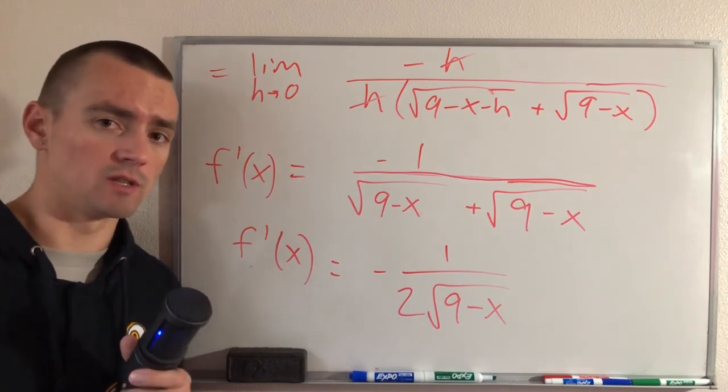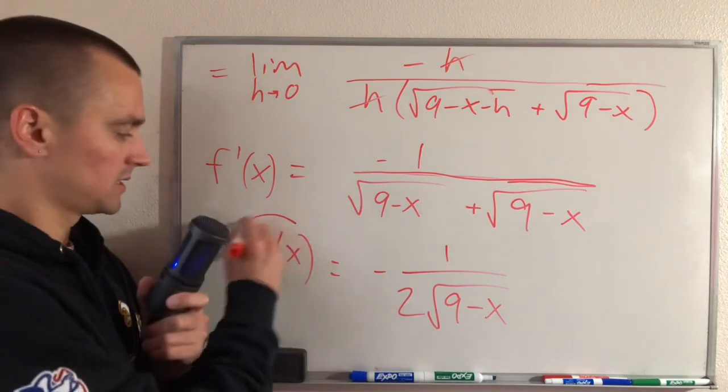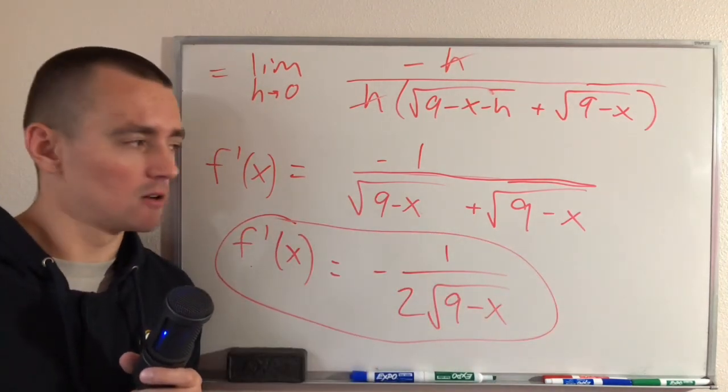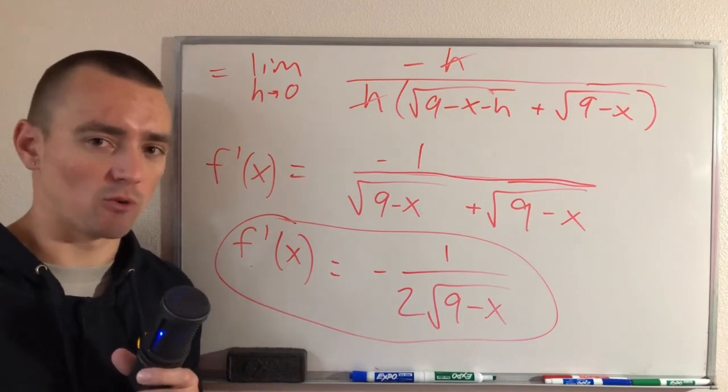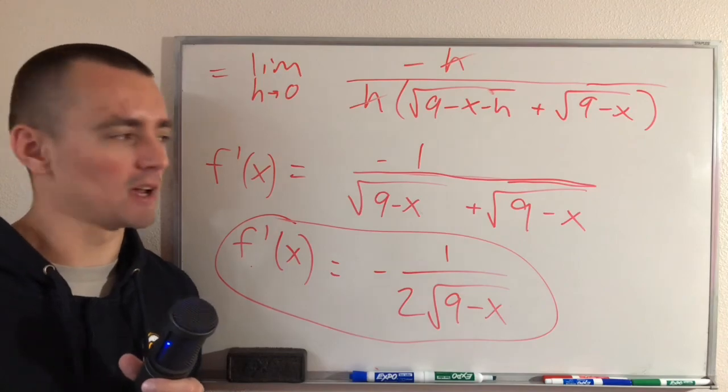So if we were to go back to our original function which was the square root of nine minus x and take the derivative of that function using the chain rule, that would basically be a shortcut to do exactly what we did here. So this is our answer. If you found this video helpful and you're new to my channel please consider subscribing. It's a great way to help support my channel so I can keep making more videos like this and I hope to see you back here soon.